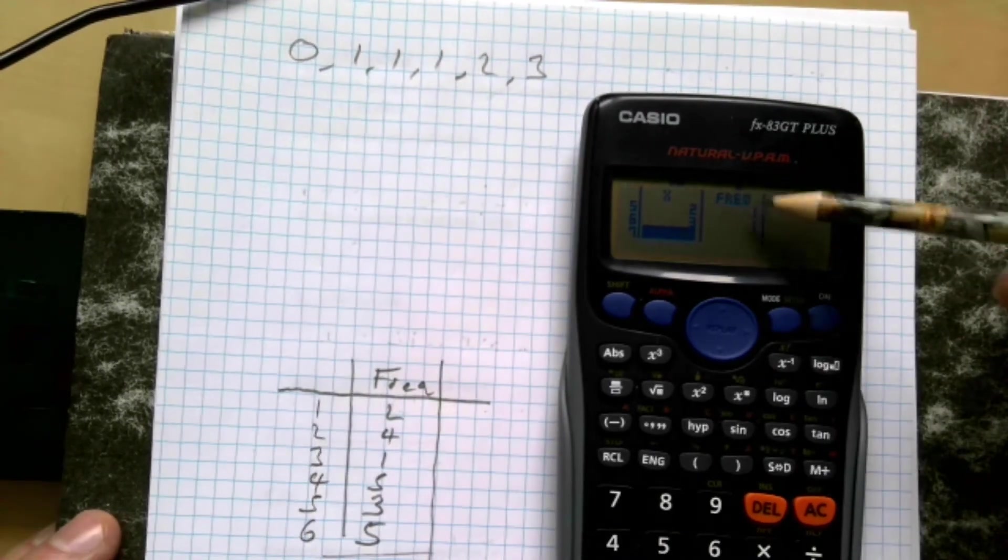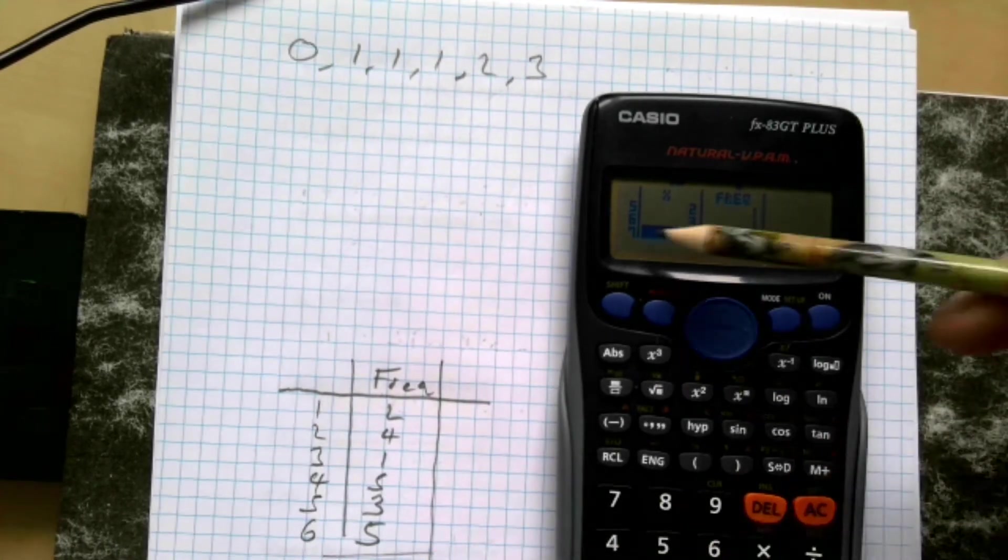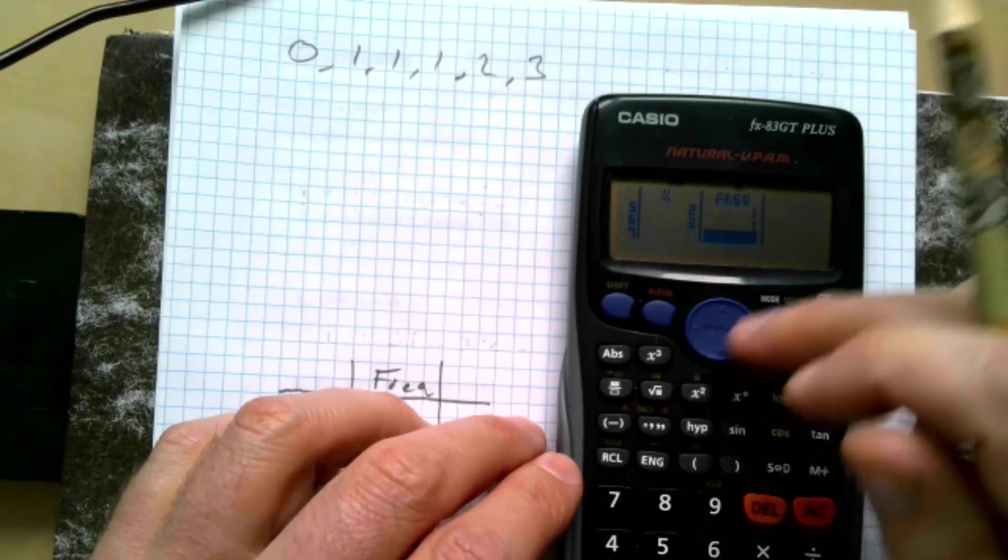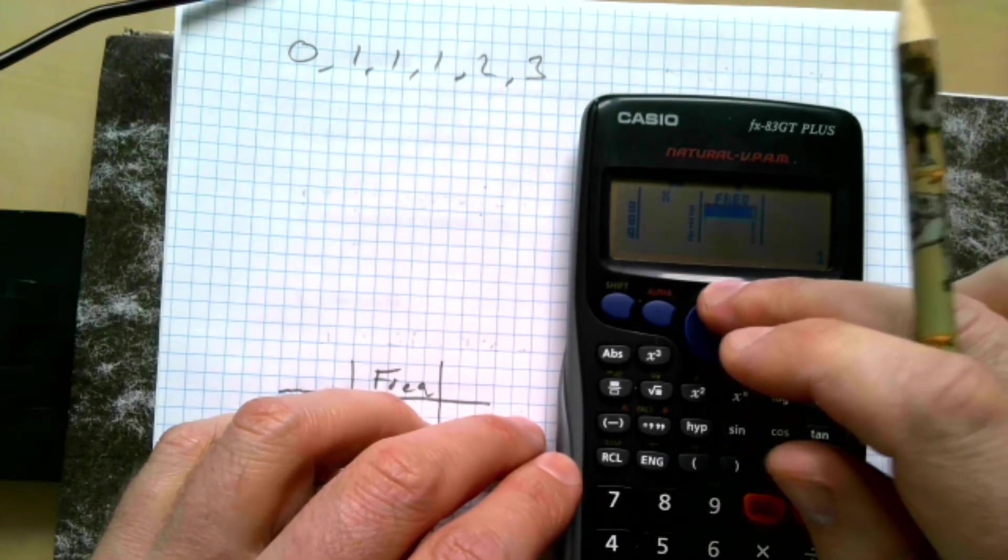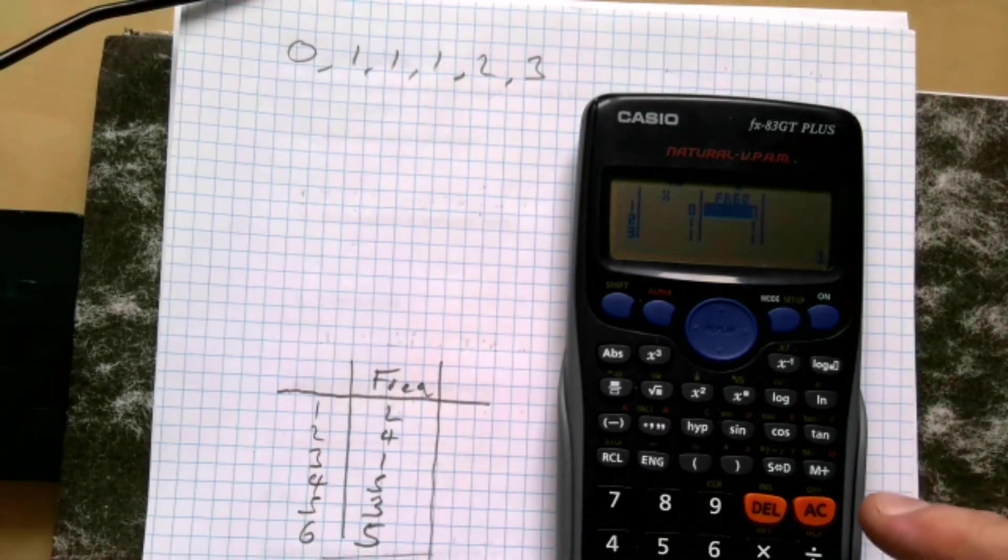And that's all my data in. It tells me the frequency of one for each of those. Then for a frequency table, whenever we do it a bit later on, we can just sub in the numbers. If you go across, you can use your cursor here to go up and down and check all your numbers and check everything's fine.